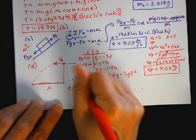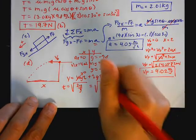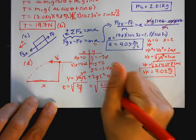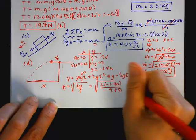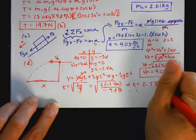So Y is V naught Y T plus 0.5 GT squared. This goes to 0. So Y is 0.5 GT squared. I'm going to rearrange the equation for the unknown in terms of known. So T is equal to the square root of 2Y over G, which is the square root of 2 times negative 1.4 over negative 9.8. So my time comes out to be 0.535 seconds.